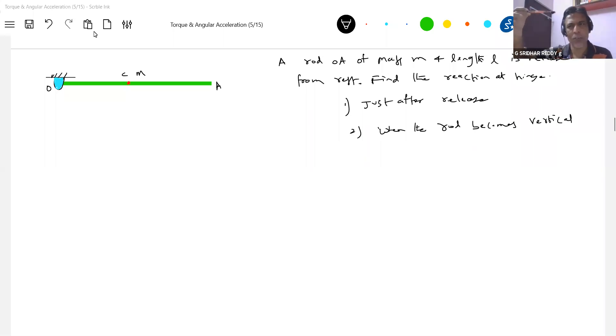Why do it will rotate? Why do it will rotate? Why do it rotate? What is it? Torque will produce rotational effect here. So the moment I release from rest, then why do it rotate? Because of torque here.